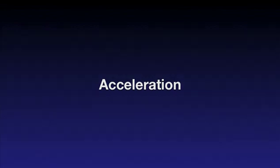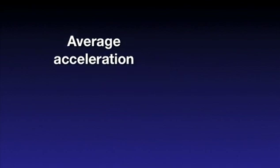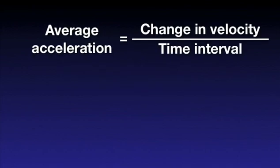The average acceleration is defined as the change in velocity divided by the time interval over which that change occurs. Using the notation introduced earlier, the acceleration is delta v over delta t. Again, remember that the arrows above the quantities indicate their vector nature.